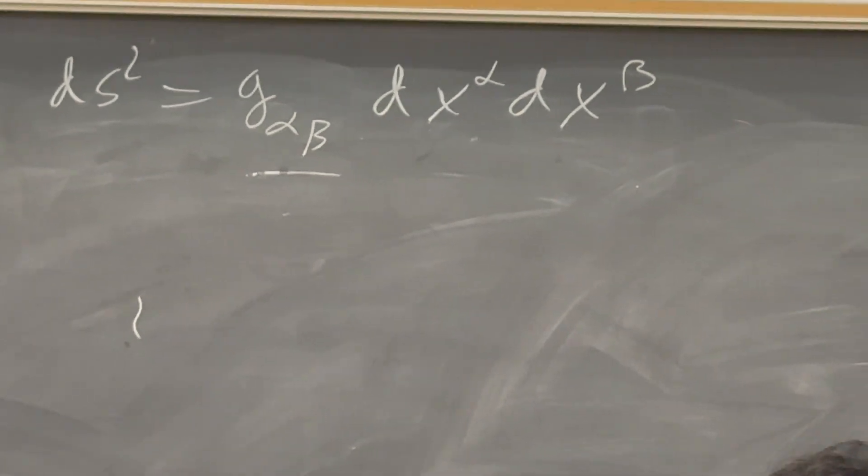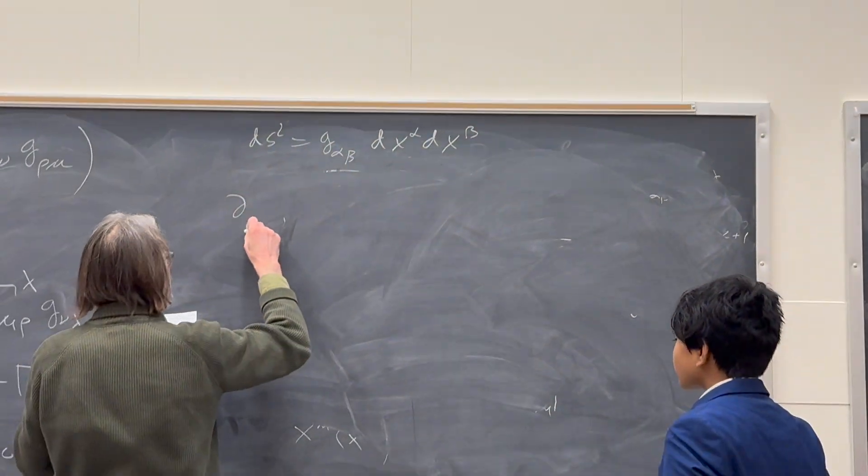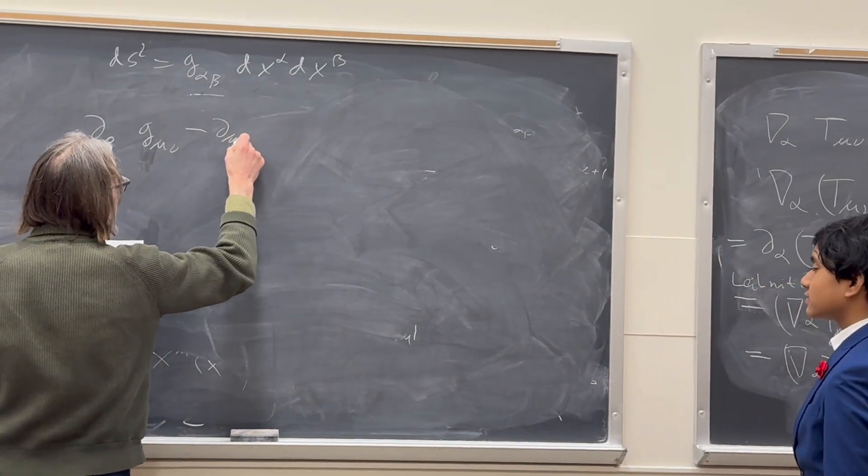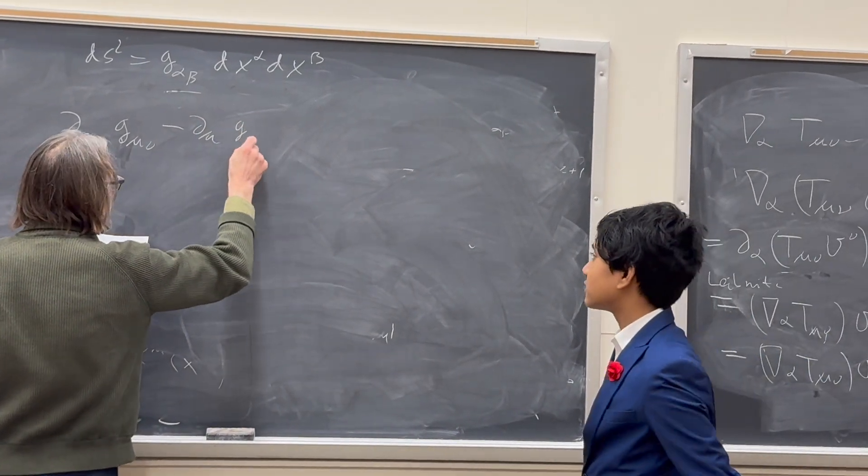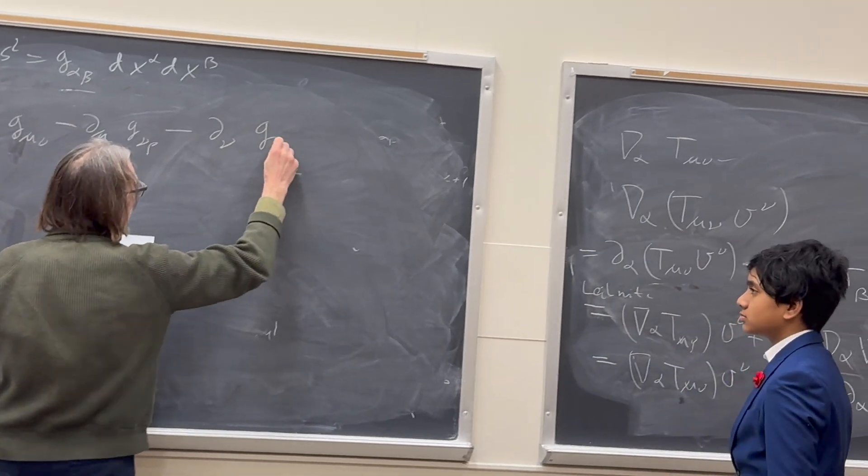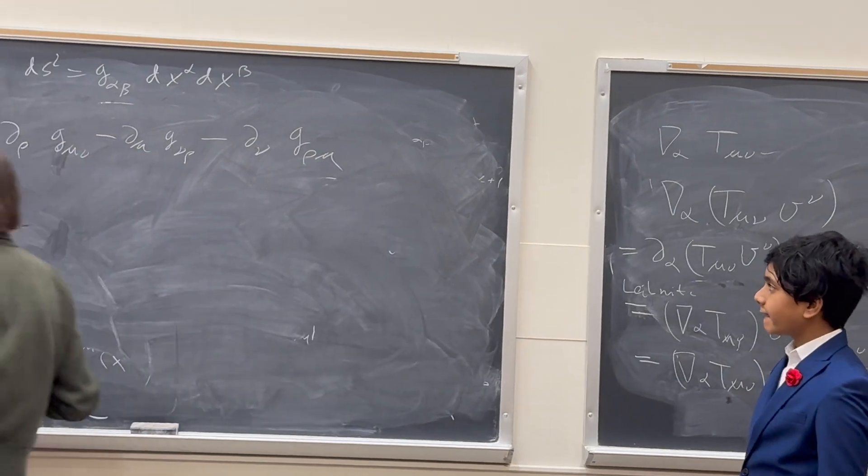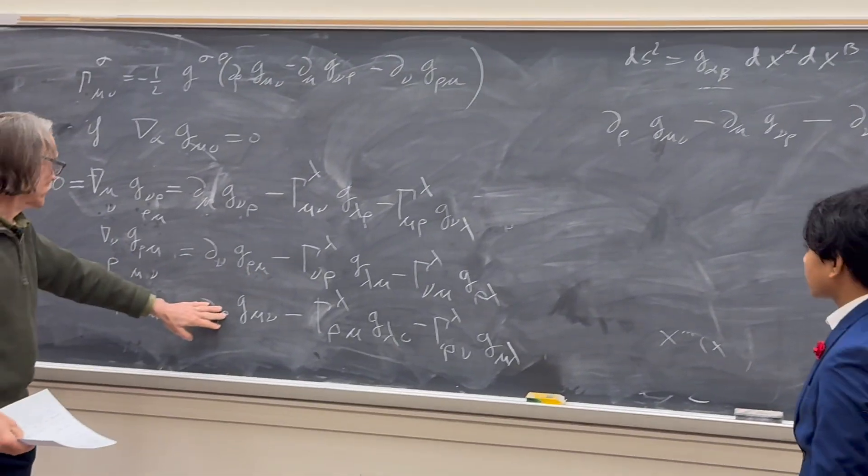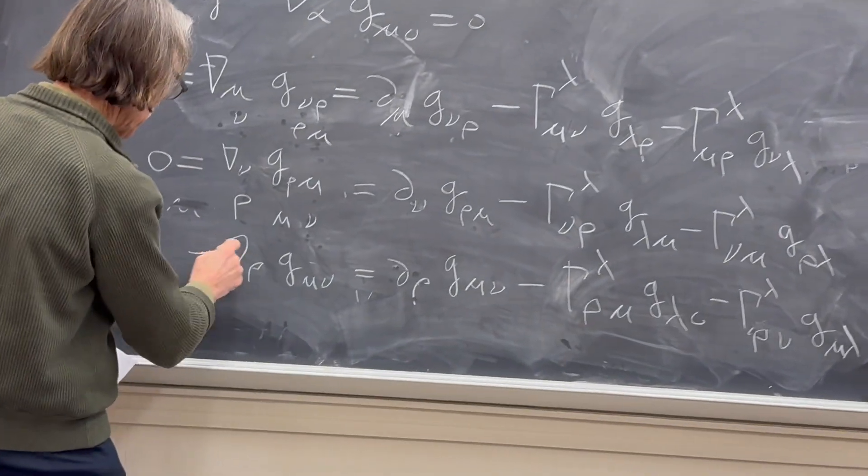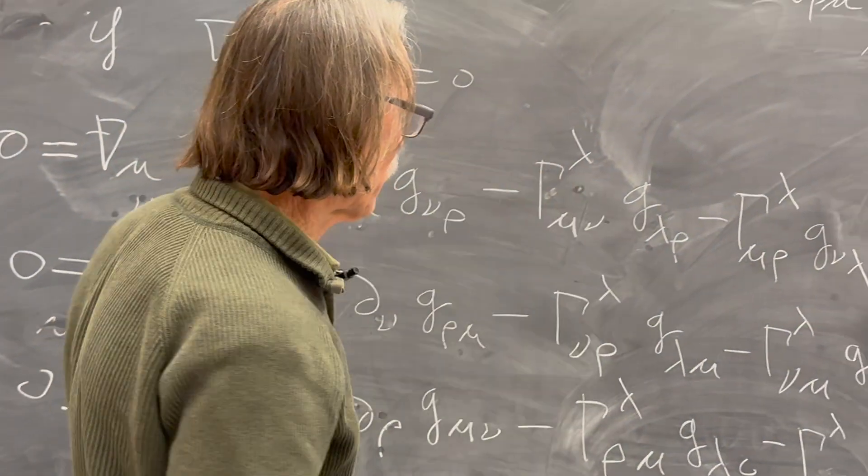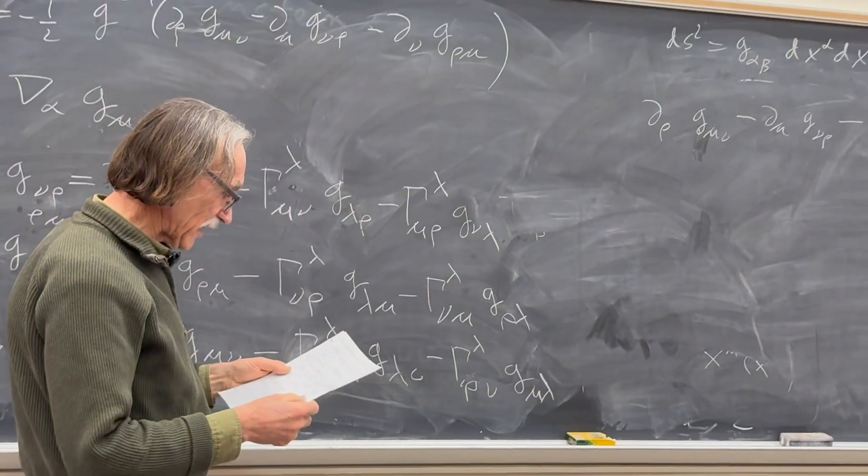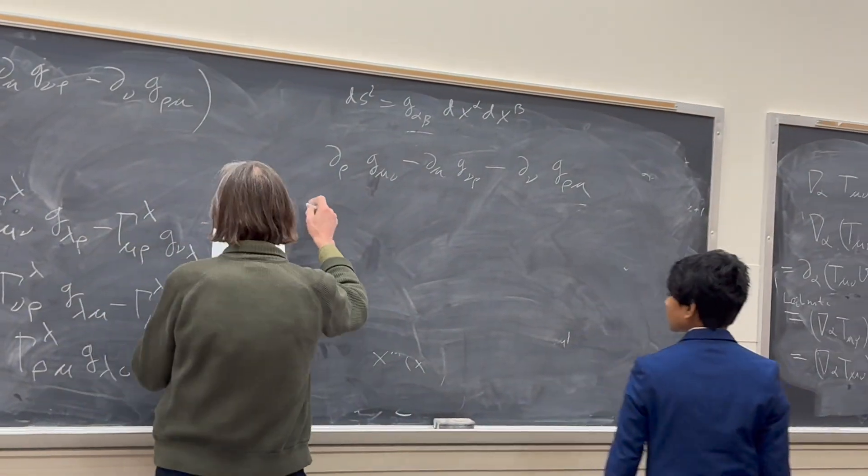So now we can do the following. We can ∂_ρ g_μν minus ∂_μ g_νρ minus ∂_ν g_ρμ. That are these three terms. And we know that each of these equations gives me a zero, so we can bring this to the other side of the equation.